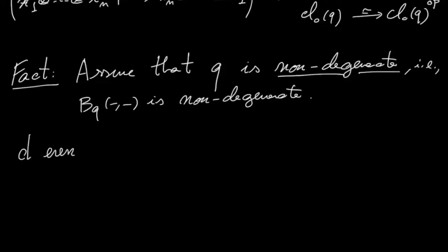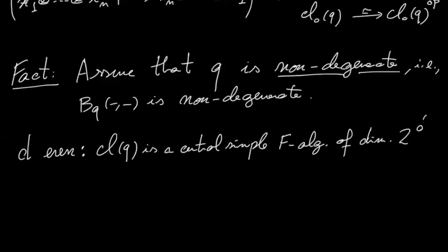So if the dimension is even d, then the Clifford algebra is a central simple F algebra of dimension 2 to the d. And when d is odd, the degree zero part of the Clifford algebra is, again, a central simple algebra of dimension 2 to the d minus 1.